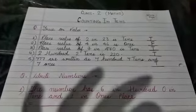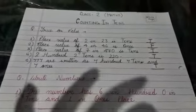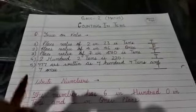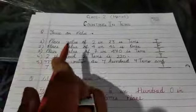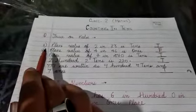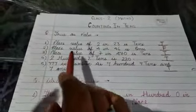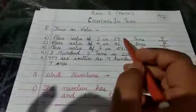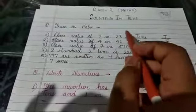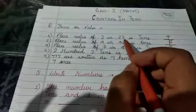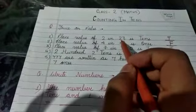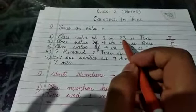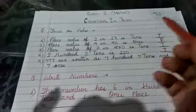We are continuing with the same chapter: counting in tens. We will solve certain true and false questions. The first one: the place value of 2 in 23 is tens. If you see the number 23, 3 is at ones and 2 is at tens, so the place value of 2 in 23 is tens. This is true, so we have written here true.